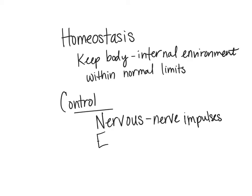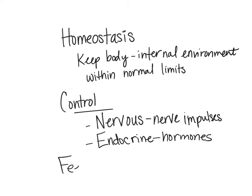The second system that controls homeostasis is the endocrine system. When we talk about the endocrine system, we're really talking about hormones. So those are the two ways we generally control homeostasis — through our nervous system and through the endocrine system — and we do this through feedback systems.